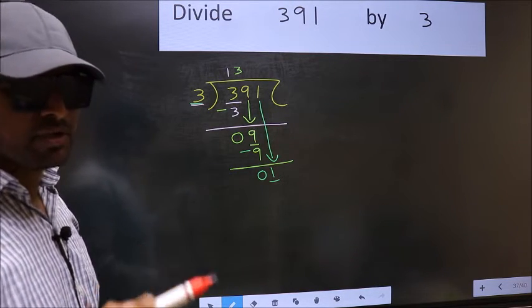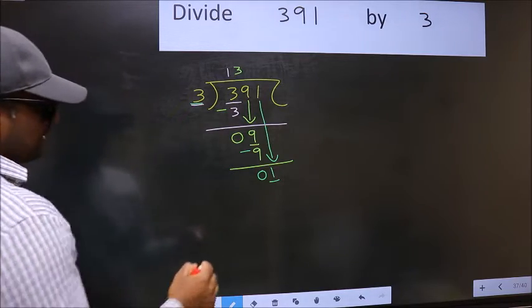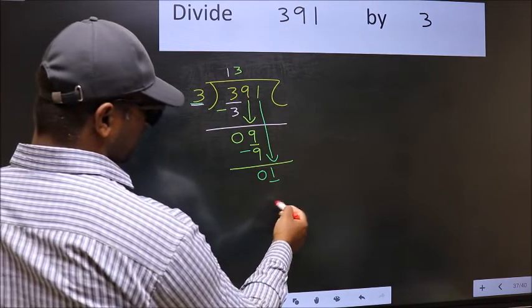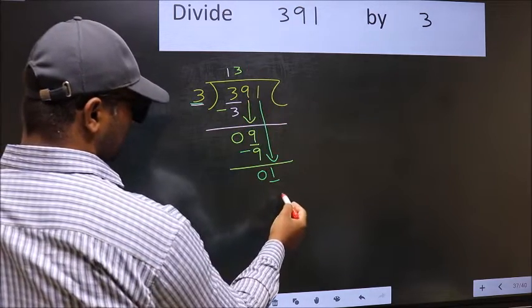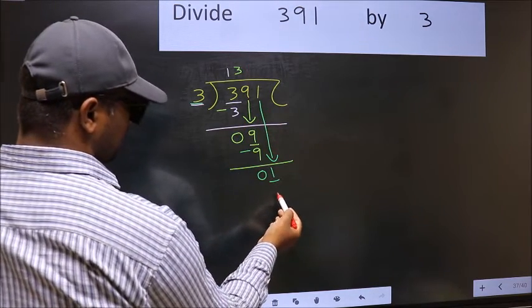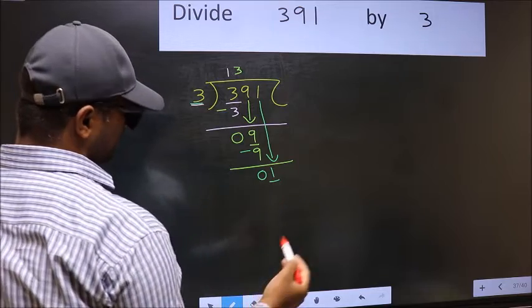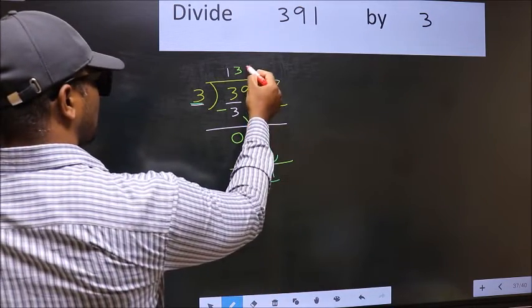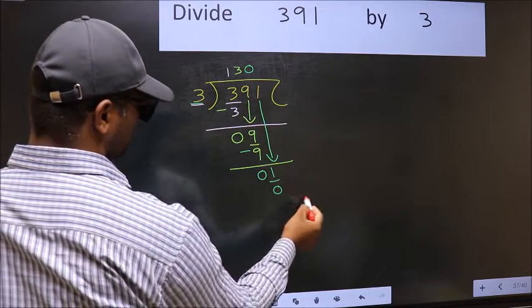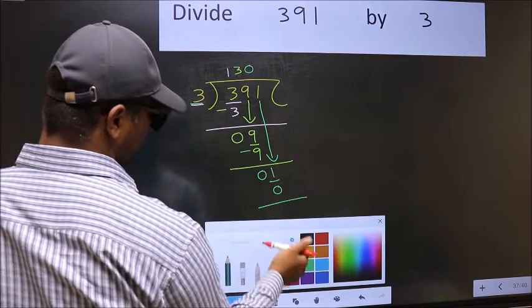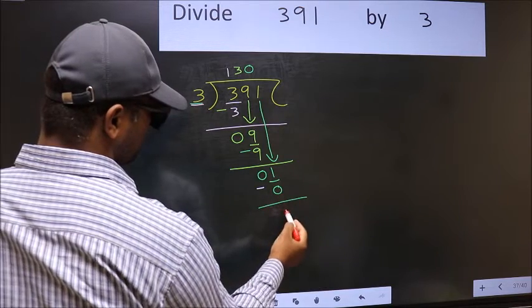Instead, what you should think of is, what number should we write here. If I take 1 here, I will get 3. But 3 is larger than 1. So what we should do is we should take 0. So 3 into 0 is 0. Now you should subtract. 1 minus 0, 1.